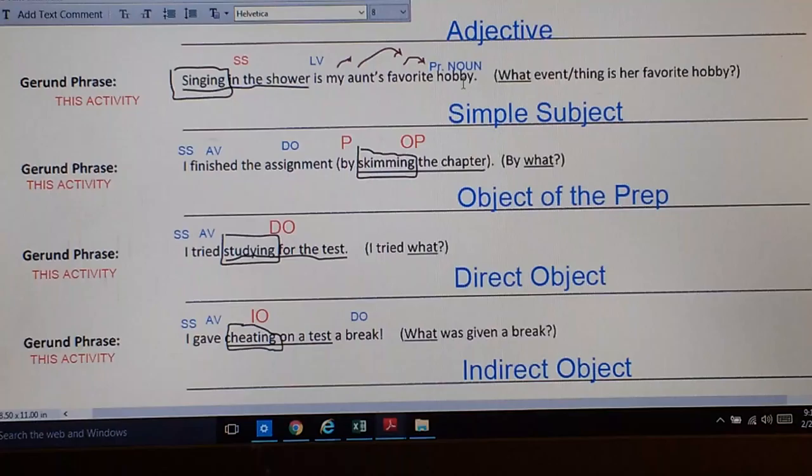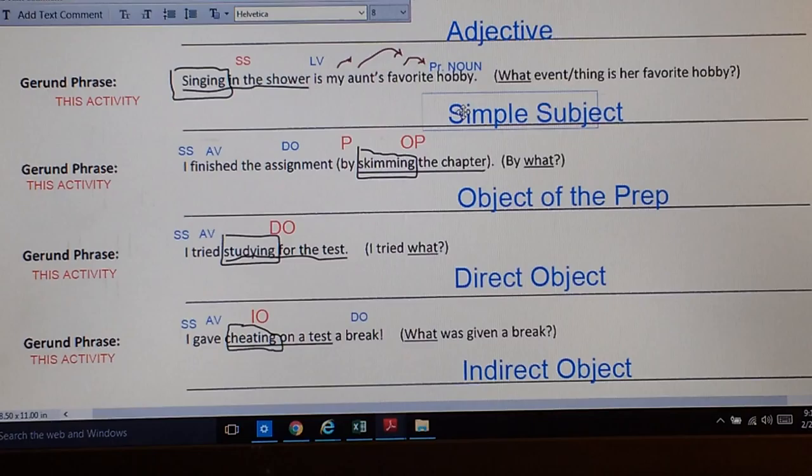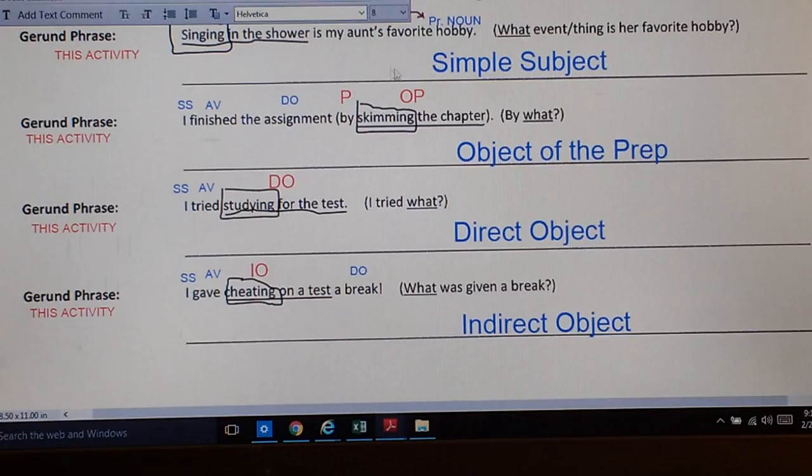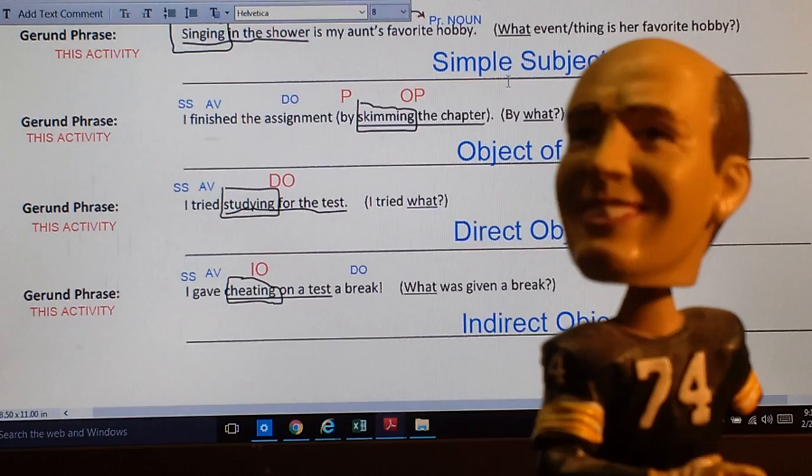So, let's look at it. Singing in the shower. We just had that. But singing in the shower, in this case, is not pointing out another person. It is simply an activity. This activity is my aunt's favorite hobby. And I have some other things there. I'm not going to describe that now, because I want us to focus on the gerund phrase itself. It acts like a noun. Specifically, it stands as the simple subject of this sentence. What is my aunt's favorite hobby? Singing in the shower.